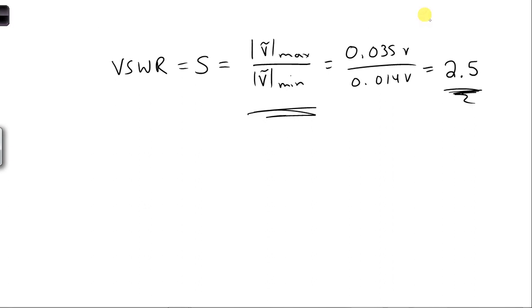In part C, we want to find the reflection coefficient, but we're not given ZL, so we can't use our usual equation ZL minus Z naught over ZL plus Z naught to find the reflection coefficient. So we'll have to find another way.